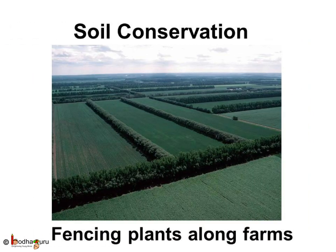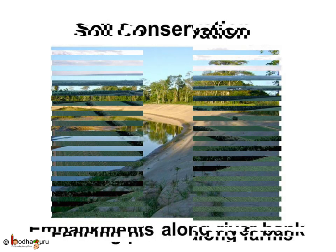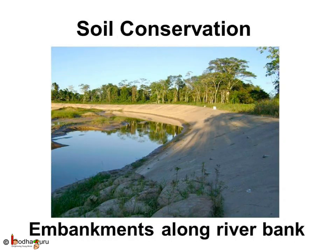Why are tall plants or trees grown along the sides of farmland? Growing fencing plants and trees along the farmland reduces the speed of the wind and therefore reduces soil erosion. To prevent soil from being washed away by the river, embankments are built along the river banks. This not only prevents soil erosion from the banks, but also prevents the river from flooding the fields.